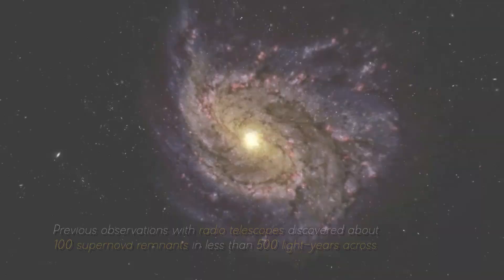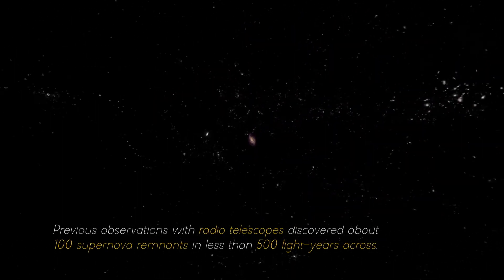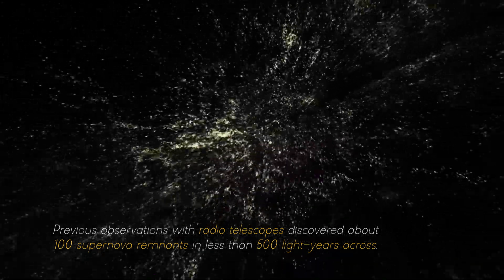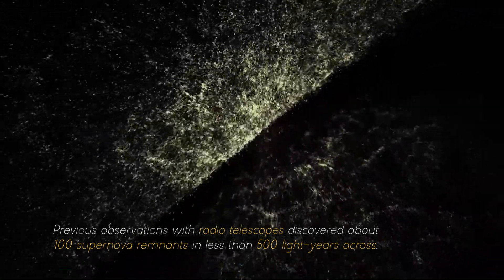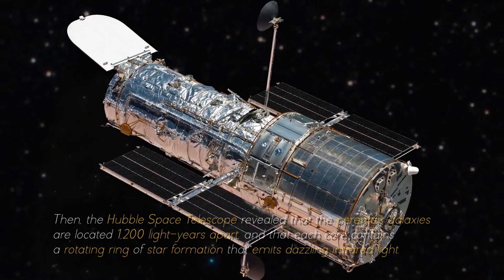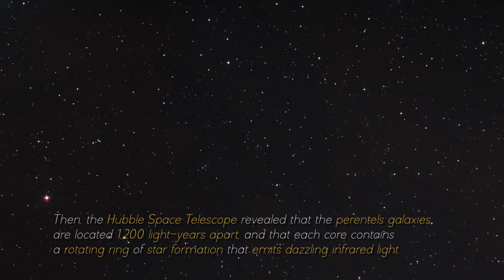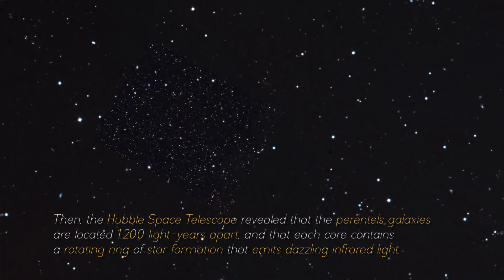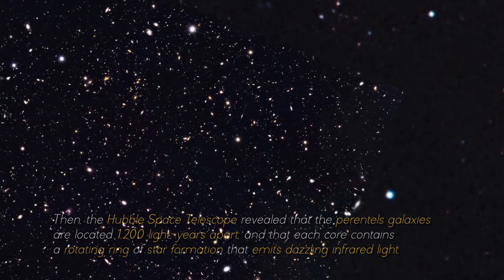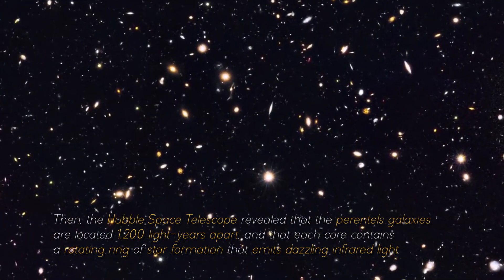Surprisingly, this small area contains as much gas as the entire Milky Way. Previous observations with radio telescopes discovered about 100 supernova remnants in less than 500 light-years across. Then, the Hubble Space Telescope revealed that the parental galaxies are located 1,200 light-years apart, and that each core contains a rotating ring of star formation that emits dazzling infrared light.